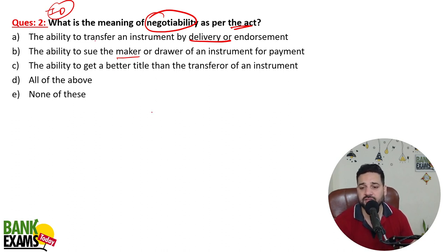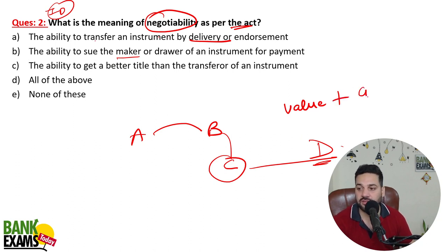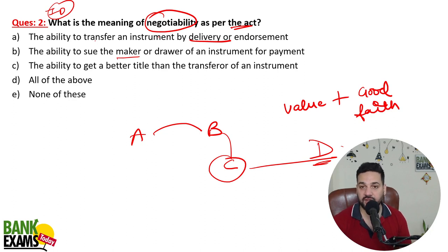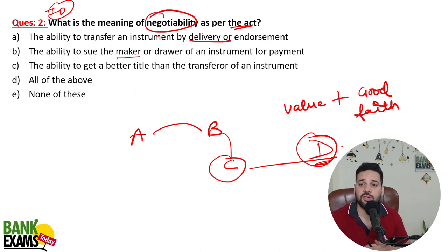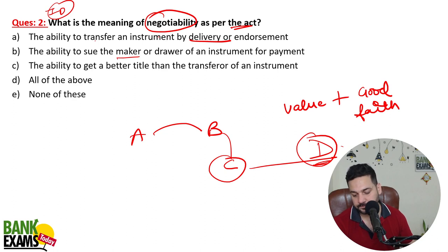Negotiability also means the ability to get a better title than the transferrer. For example, A gave B a cheque, C stole that cheque and gave it to D. D got the cheque for value and in good faith — D checked that the cheque was genuine. That makes D a holder in due course. D has a better title than C. C obviously doesn't have any title and cannot sue. So the correct answer is: all of the above.